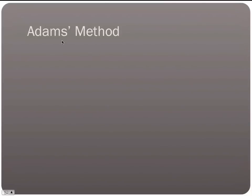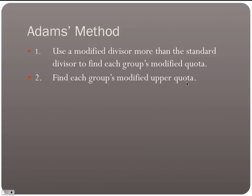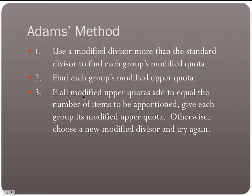Our last method is Adam's method. Here, we use a modified divisor that is more than the standard divisor to find each group's modified quota. Then we find each group's modified upper quota — so we take all our numbers and round up. If all the modified upper quotas add to equal the number of items to be apportioned, give each group its modified upper quota. Otherwise, choose a new modified divisor and try again.